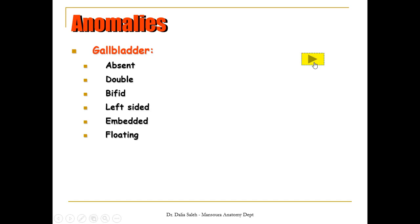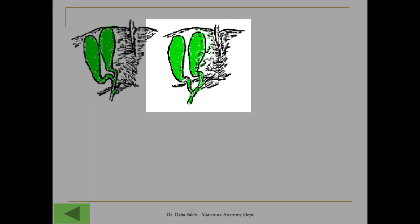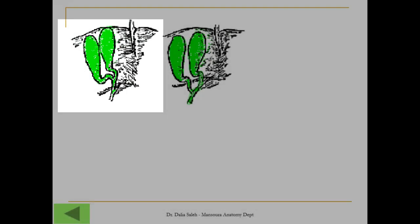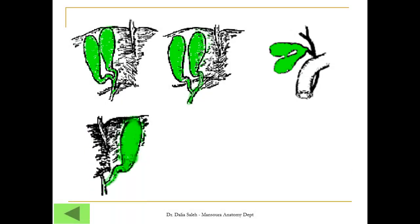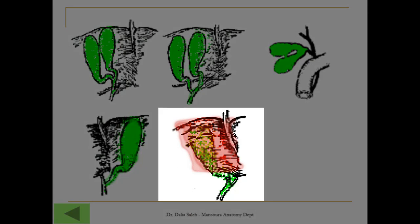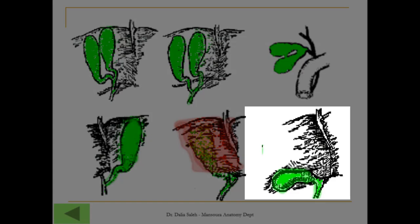Here in these pictures, we have a double gallbladder. Each one has its own cystic duct; either they remain separate or they unite and form a single cystic duct. Here we can see a bifid gallbladder — they unite at their neck and have only one cystic duct. In this picture, the gallbladder lies on the left side, or it may be embedded within the liver tissue, or floating with a piece of mesentery below the liver.